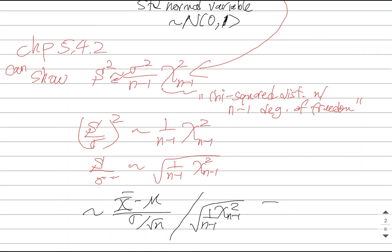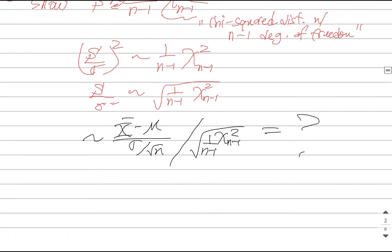X bar minus mu divided by the square root of this strange distribution. What on earth is this? It turns out this is distributed kind of like a normal, a standard normal distribution divided by this weird chi-squared distribution. So it's no longer correct to call this Z anymore. It's something new. We are going to call it a T.